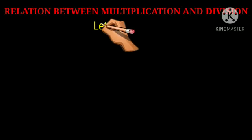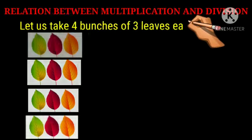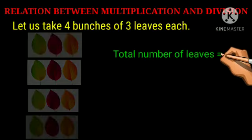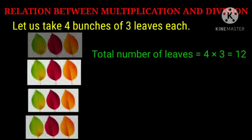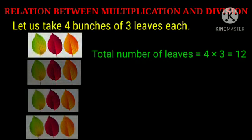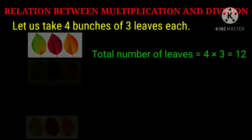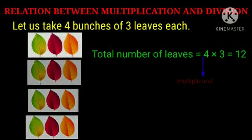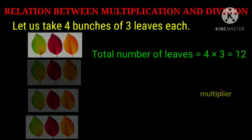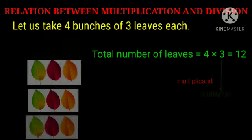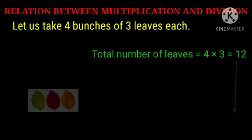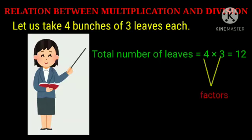Let's understand this with the help of an example. Let us take 4 bunches of 3 leaves each. Now find out the total number of leaves. Total number of leaves equals 4 multiplied by 3, which equals 12. Here 4 is the multiplicand, 3 is the multiplier, and 12 is the product. Or you can say 4 and 3 are the two factors of 12.